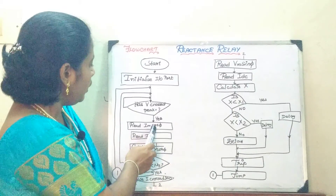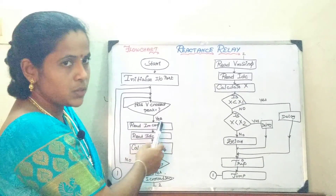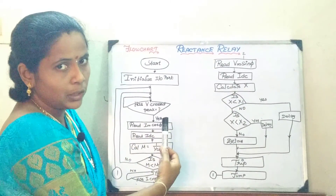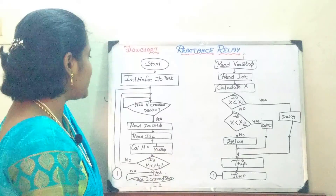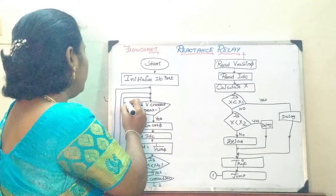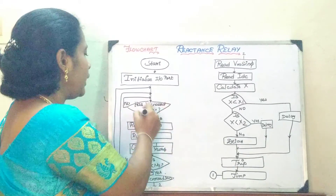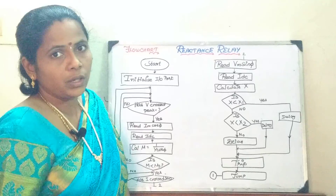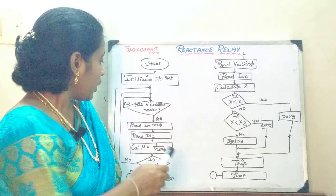You have to read the Im cos φ. You are going to read the instantaneous value of the current Ls. You have to wait until your voltage is getting crossed its peak.